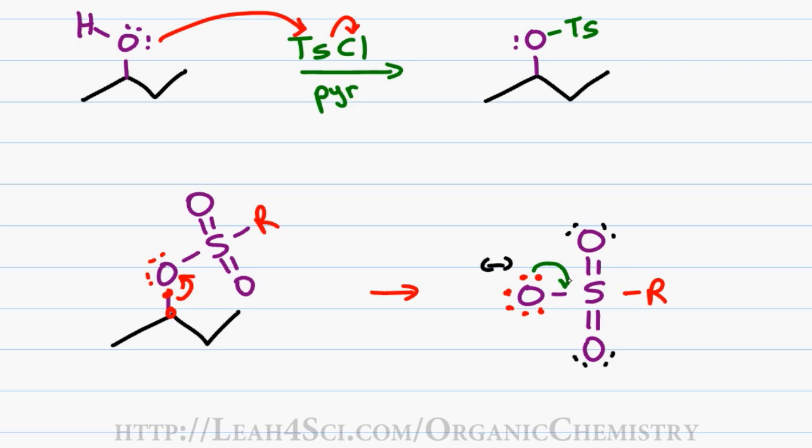Oxygen can use its electrons to form a pi bond between itself and sulfur, kicking out the pi bond from the top sulfur oxygen, or it can do the same thing and kick out the pi bond from the bottom sulfur to oxygen.